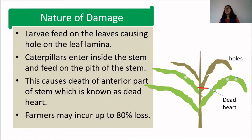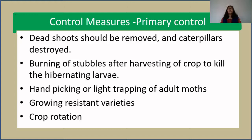Control measures of Jawar stem borer. The first type is primary control measures. Dead shoots after the formation of dead heart must be cut, removed, and destroyed along with the caterpillars. After harvesting the Jawar, the stubbles remaining in the field are to be burned to kill hibernating larvae. Hand picking or light trapping of adult moths can be done and then the moths can be killed. Growing resistant varieties of Jawar plant helps in controlling this pest. Crop rotation is very important — when the same crop is absent, the pest cannot find a host plant and will die of starvation.